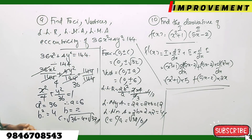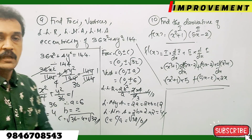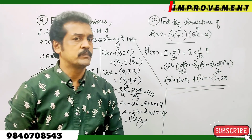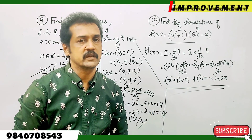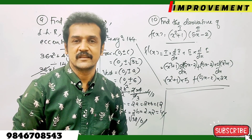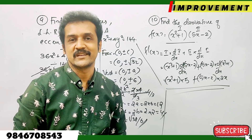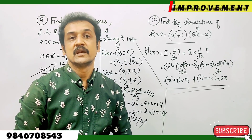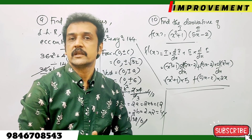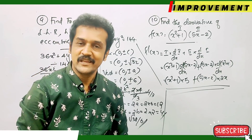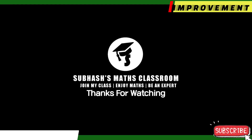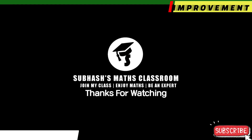So f dash x equals 5 times (x squared plus 1) plus 2x times (5x minus 2). That concludes this class. Bye bye.